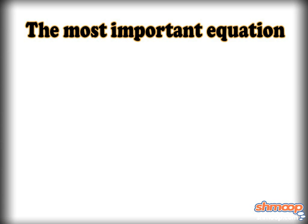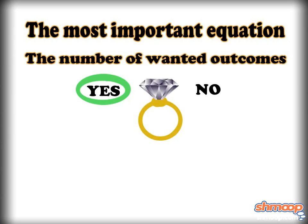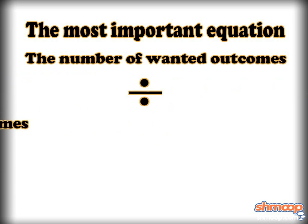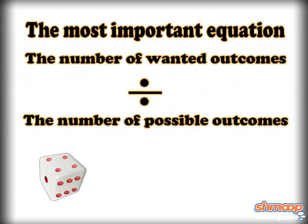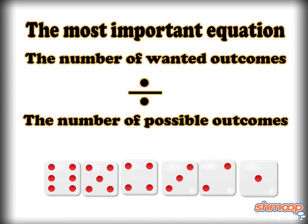The most important equation in basic probability is the number of favorable or wanted outcomes divided by the number of outcomes that are possible.